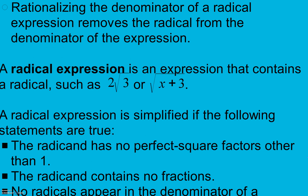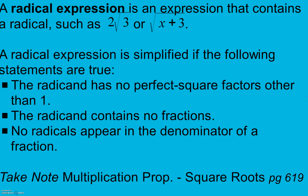A radical expression is simplified if the following statements are all true. The radicand — that's the thing inside our square root, like our 3 or our x plus 3 — has no perfect square factors other than 1. The radicand also can't have any fractions, and no radicals can appear in the denominator of a fraction. That's how we have a radical expression in simplest form.